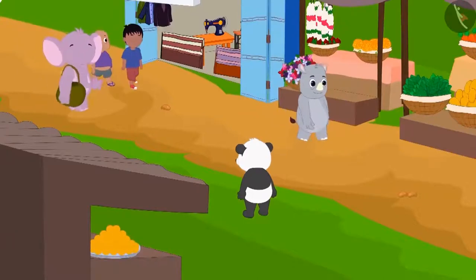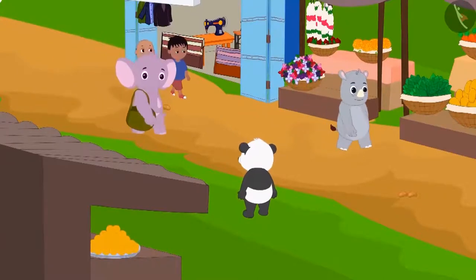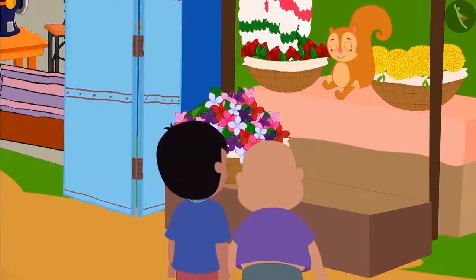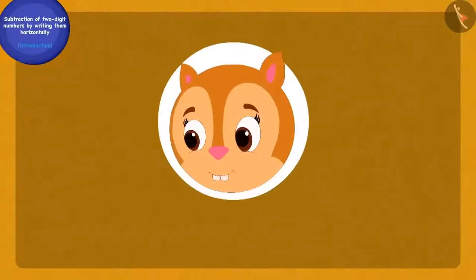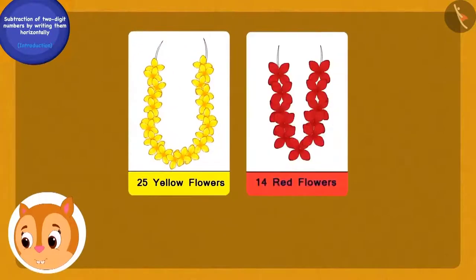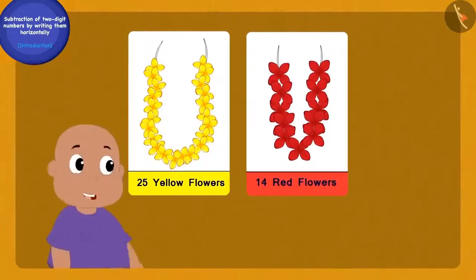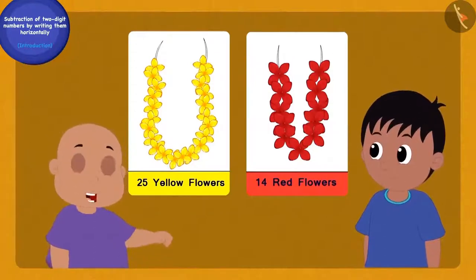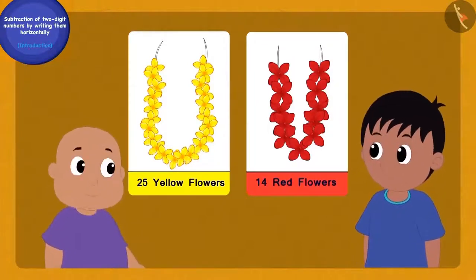One day, Raju and Bablu went to Chanda's flower shop. One garland of Chanda had 25 yellow flowers and the other garland had 14 red flowers. Bablu asked Raju: